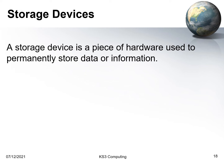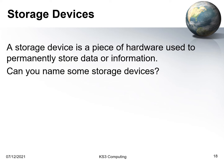Most computer systems also need storage devices — something that holds a permanent copy of data or information. If you've got a laptop or desktop computer you might have a hard disk drive or an SSD inside it. The key thing about a storage device is that when you turn the computer off the data is still stored, and when you turn it back on the data comes back. This is quite different from RAM: if you have information in RAM and you turn the machine off, that data is lost because RAM loses its contents when the power goes off.